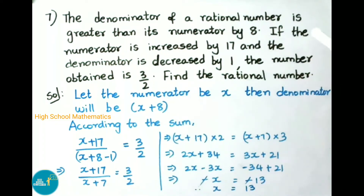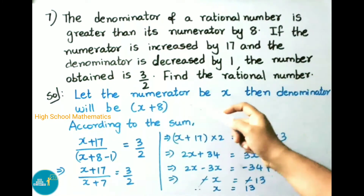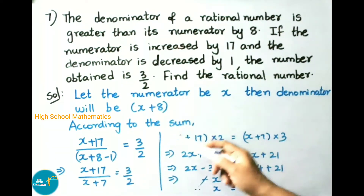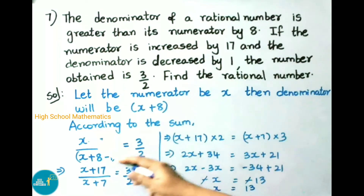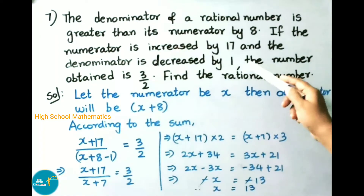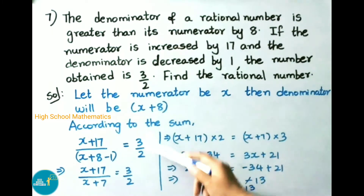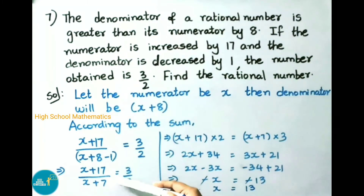See now question number 7: The denominator of a rational number is greater than its numerator by 8. If the numerator is increased by 17 and the denominator is decreased by 1, the number obtained is 3/2. Find the rational number. Let the numerator be x; then the denominator will be x + 8. If numerator is increased by 17 that is x + 17, and denominator decreased by 1 means x + 8 - 1 = x + 7. So (x + 17) / (x + 7) = 3/2.